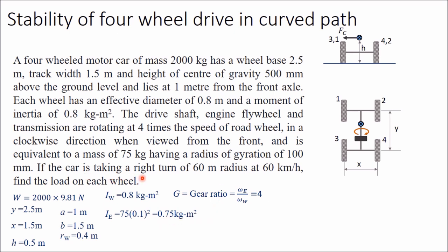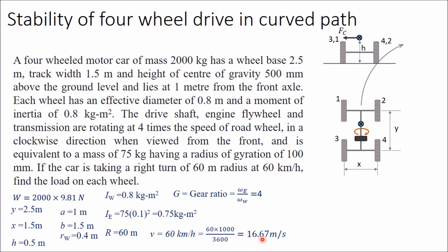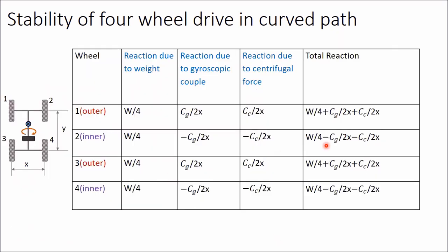The car is taking a right turn of 60 meter radius, so R is equal to 60 meter. Velocity is given as 60 kilometer per hour, which is converted to meter per second: 60 multiplied by 1000 divided by 3600, giving velocity as 16.67 meter per second. In a previous video this table was explained, and according to that table each of the four wheels takes equal load when the center of gravity is exactly at the center of the vehicle.